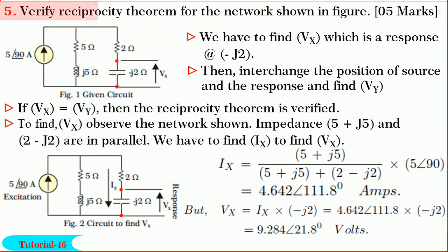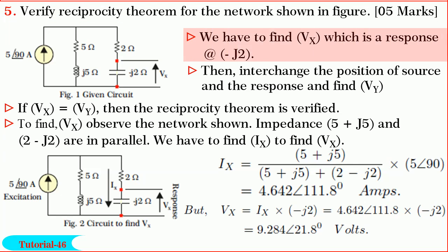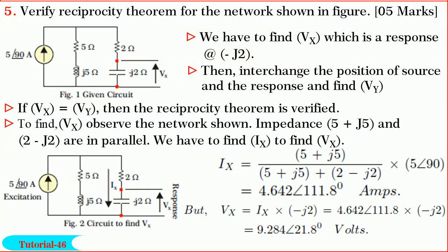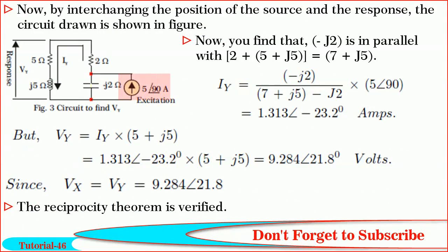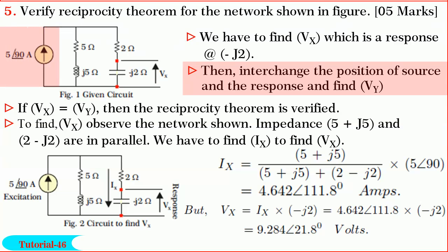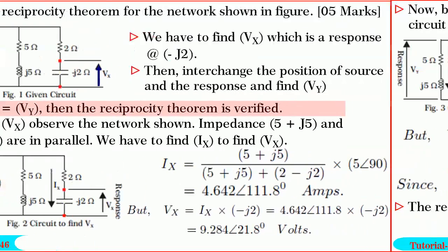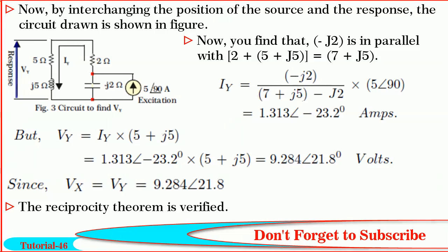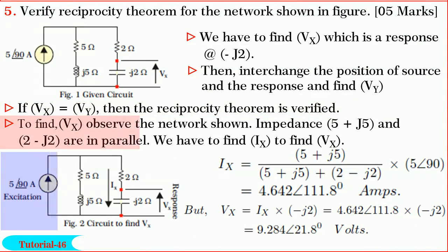Friends, next we shall solve the problem on the reciprocity theorem. In this question, we are required to verify the reciprocity theorem. We have to find Vx, which is the response across minus j2, where the source is a current source of 5 angle 90 amperes. Then, interchanging the positions of the source and response, we have to find Vy, which will be the response where the source was present earlier. If we get Vx equals Vy, then the reciprocity theorem is verified.